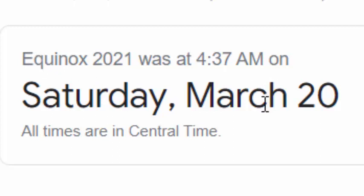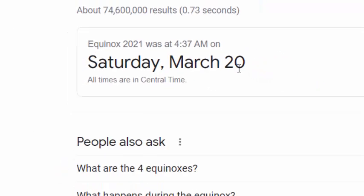Instead of claiming the equinox to be on March the 21st like it was in 1582, now they're telling us it falls on March the 20th. But when you look at this very closely, a problem is identified because of simple mathematics.